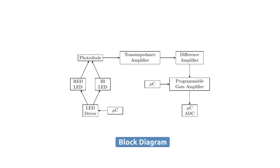After the transimpedance stage, we need to remove the DC level from the signal so that the AC component can be further amplified. Then we have a Programmable Gain Amplifier stage, where the microcontroller selects the gain needed. Finally, the ADC reads the digital signal and the microcontroller implements the formula to calculate SpO2. This is the entire block diagram and design.